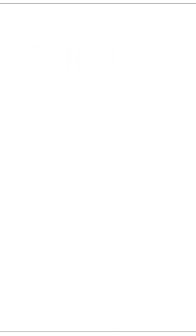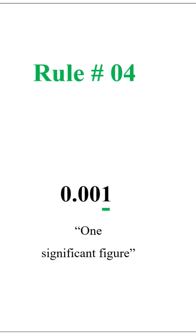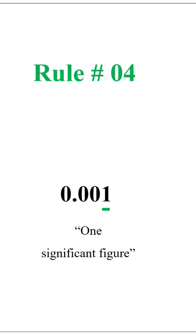Rule number four: zeros locating the decimal point in numbers less than one are not significant. For example, 0.001 has only one significant figure.